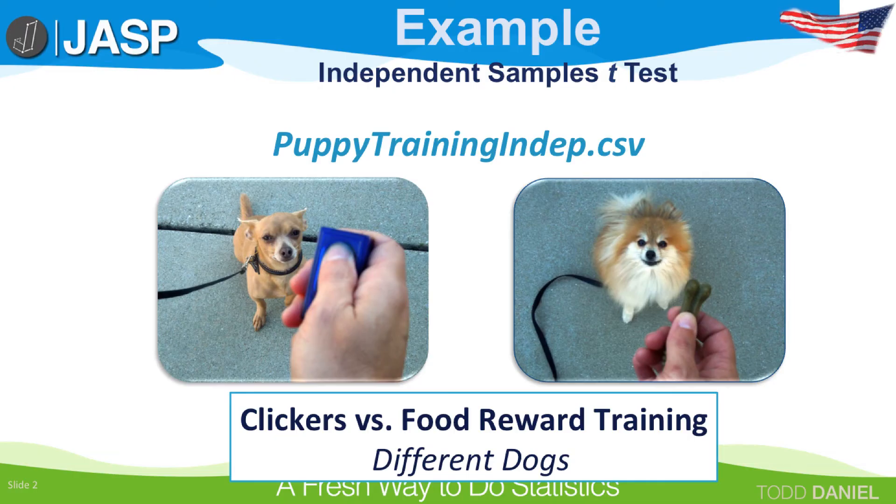Here is the setup for our research. There are two popular ways to train dogs. One involves using a clicker, which creates a sharp click that reinforces when the dog has done something right. The other method, of course, is food training, or treats, in which the dog gets a small morsel when he responds correctly. Because this is an independent samples t-test, the researcher is going to use different dogs for each group.